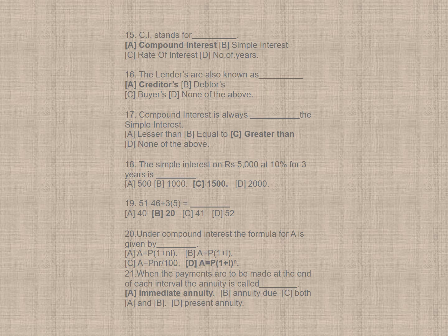Question 17. Compound interest is always, the simple interest, so here correct option is C, greater than. Question 18. The simple interest on Rs 5,000 at 10% for 3 years, if you calculate, it is defined to be 1,500, so correct option is C. Question 19. 51 minus 46 plus 3 into 5, that is 20, correct option is B, 20.